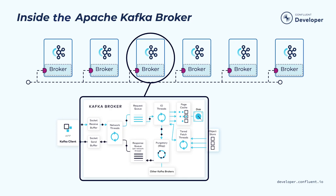There are two main types of requests each broker is handling. One is the produce request from the producer, and the other is the fetch request from the consumer. Both types of requests are going through a few common steps on the broker, and we'll go through them one by one.